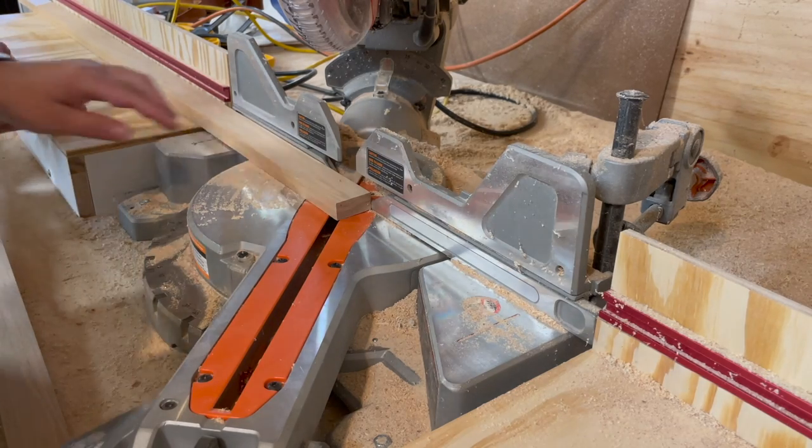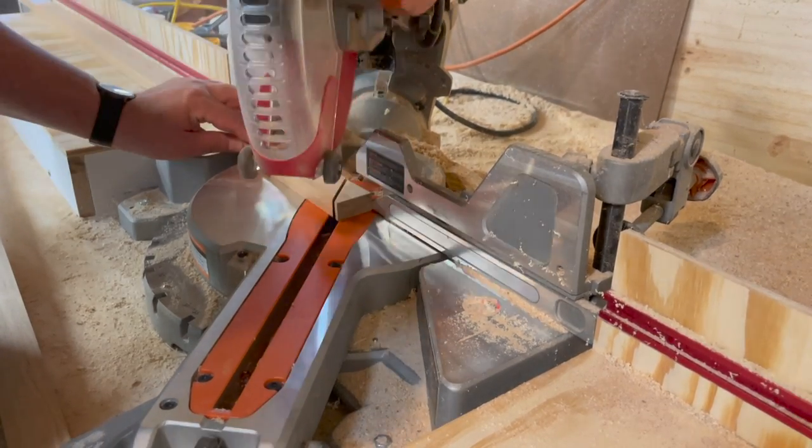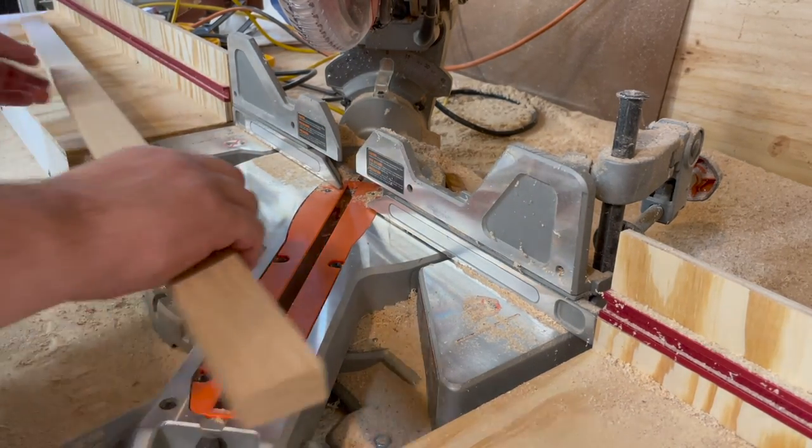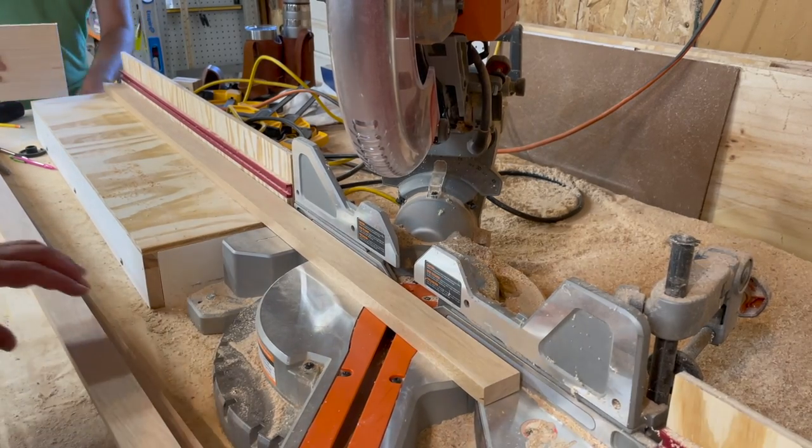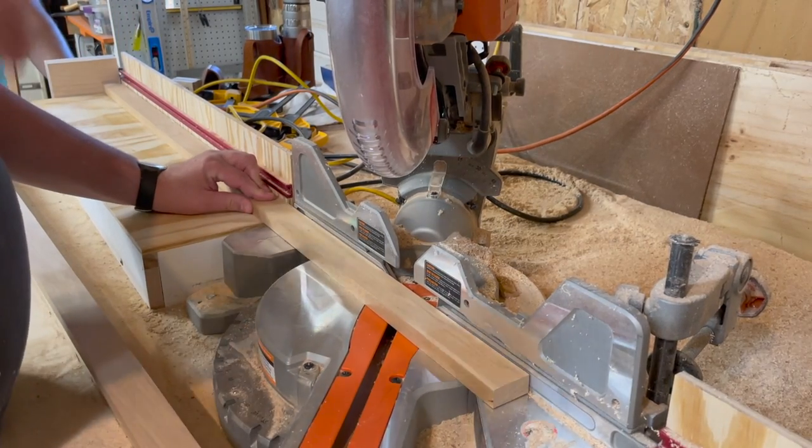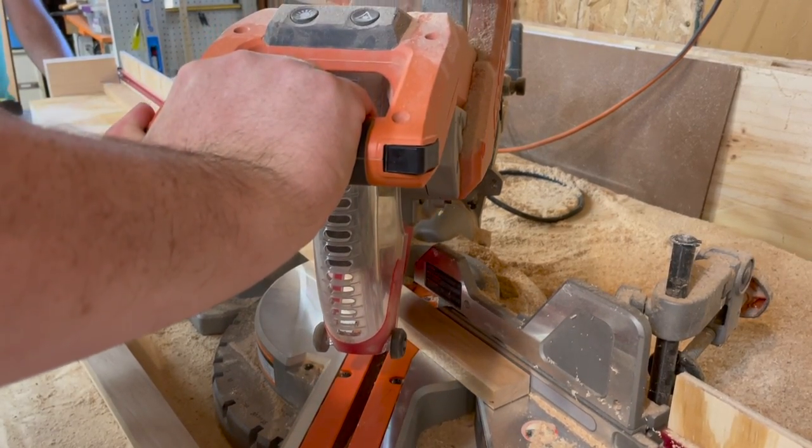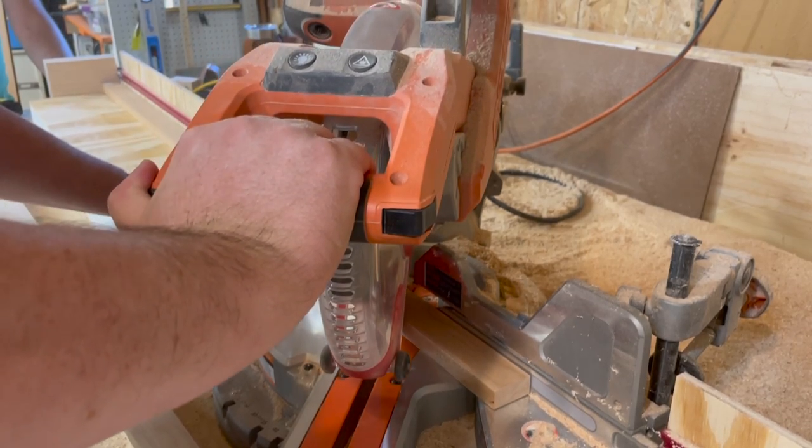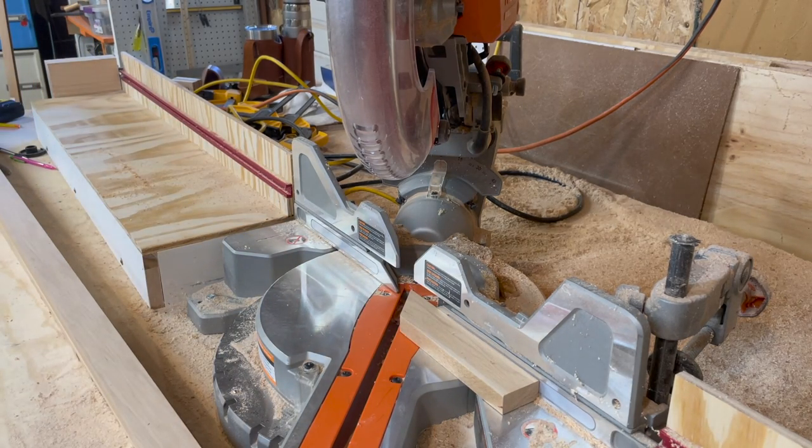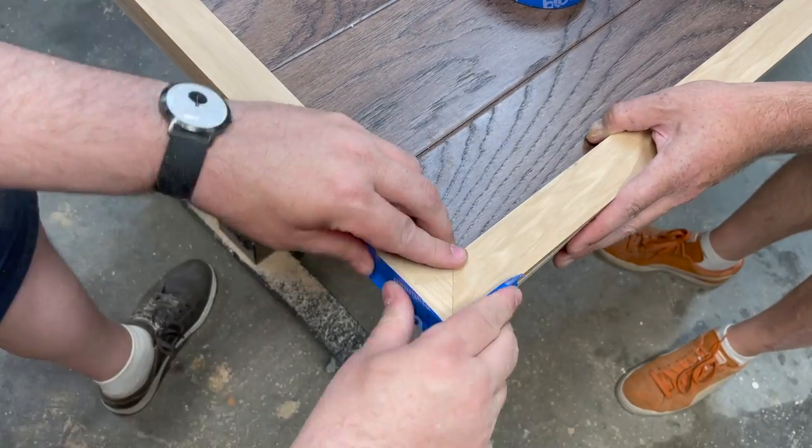To cut our top trim pieces, we set the miter saw to 45 degrees and cut one end off of each piece. Then we took that end and set everything up with a stop block. It just so happened that the very end of this miter saw bench was pretty much exactly the length we needed, so we just set it up that way. Another 45 degree angle cut at the other end gives us perfectly mitered corners on these trim pieces.